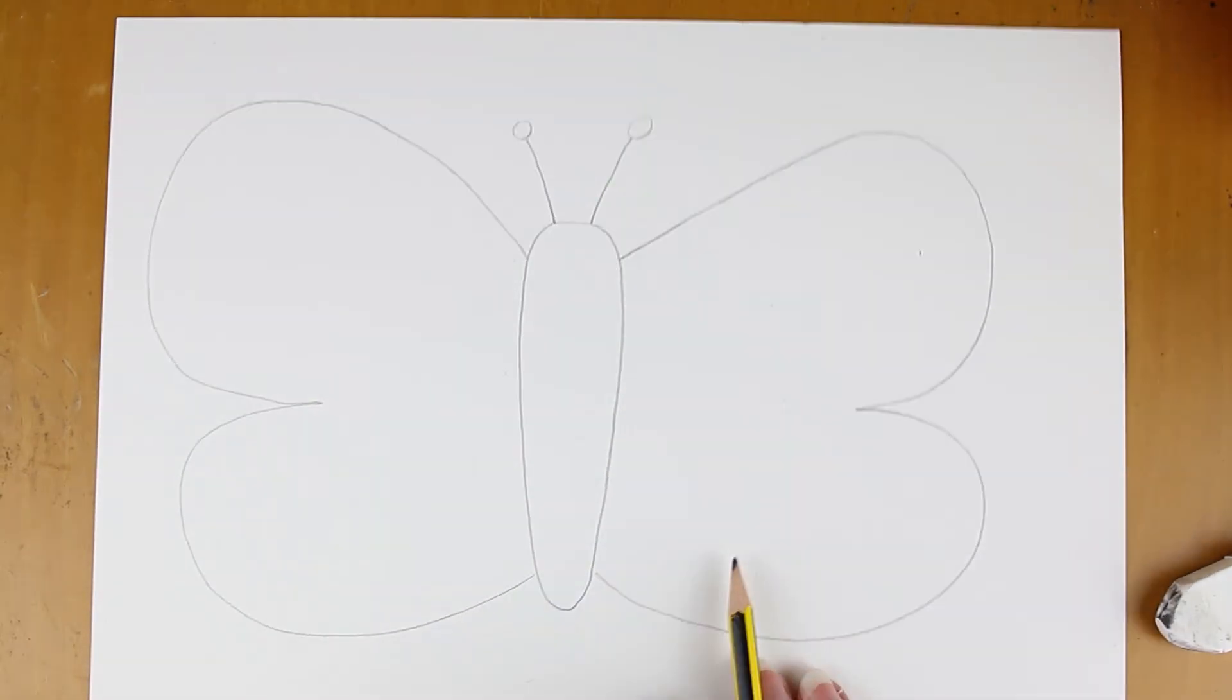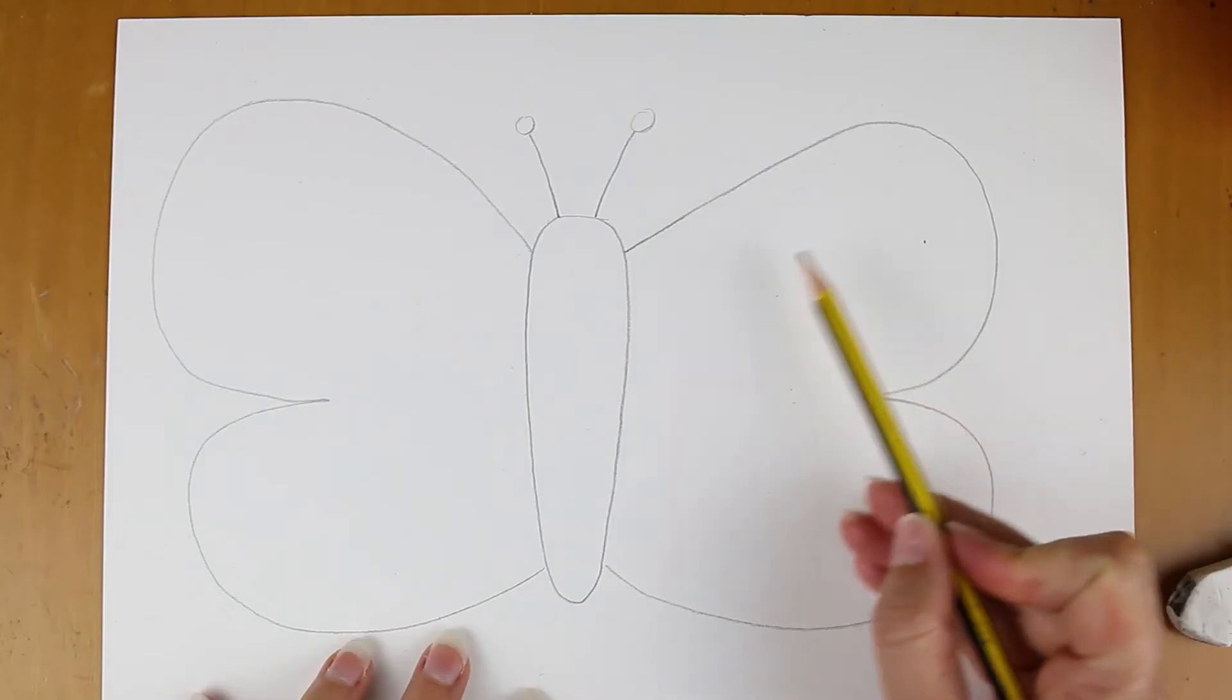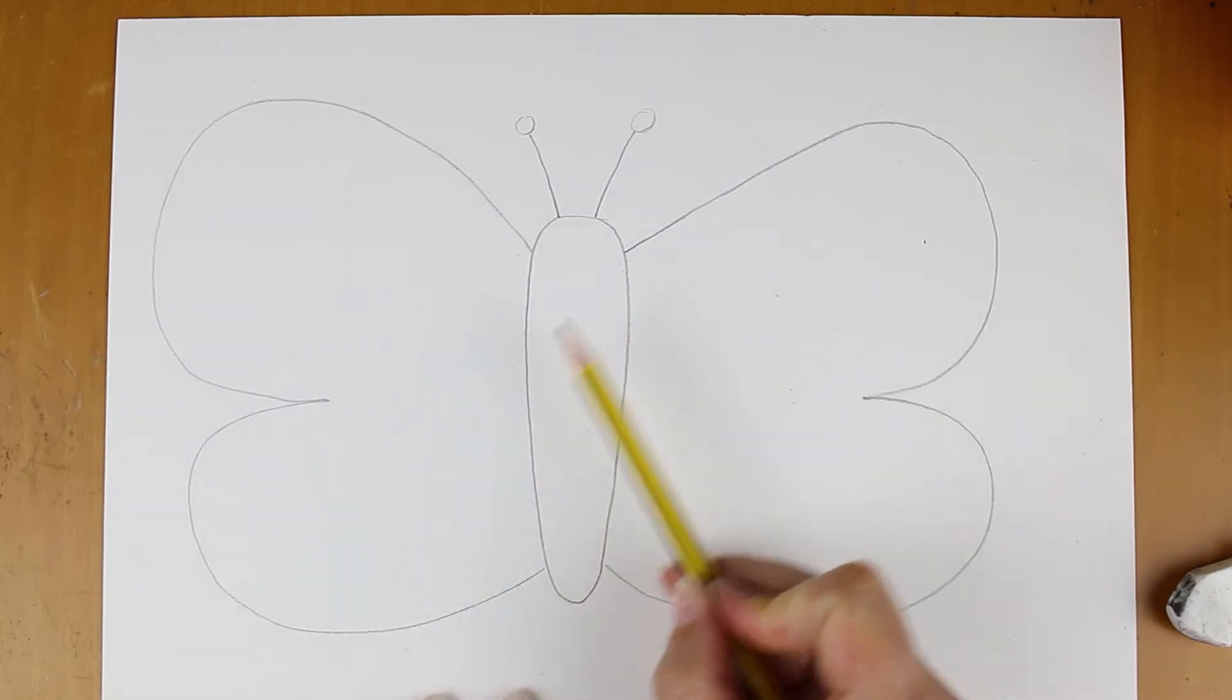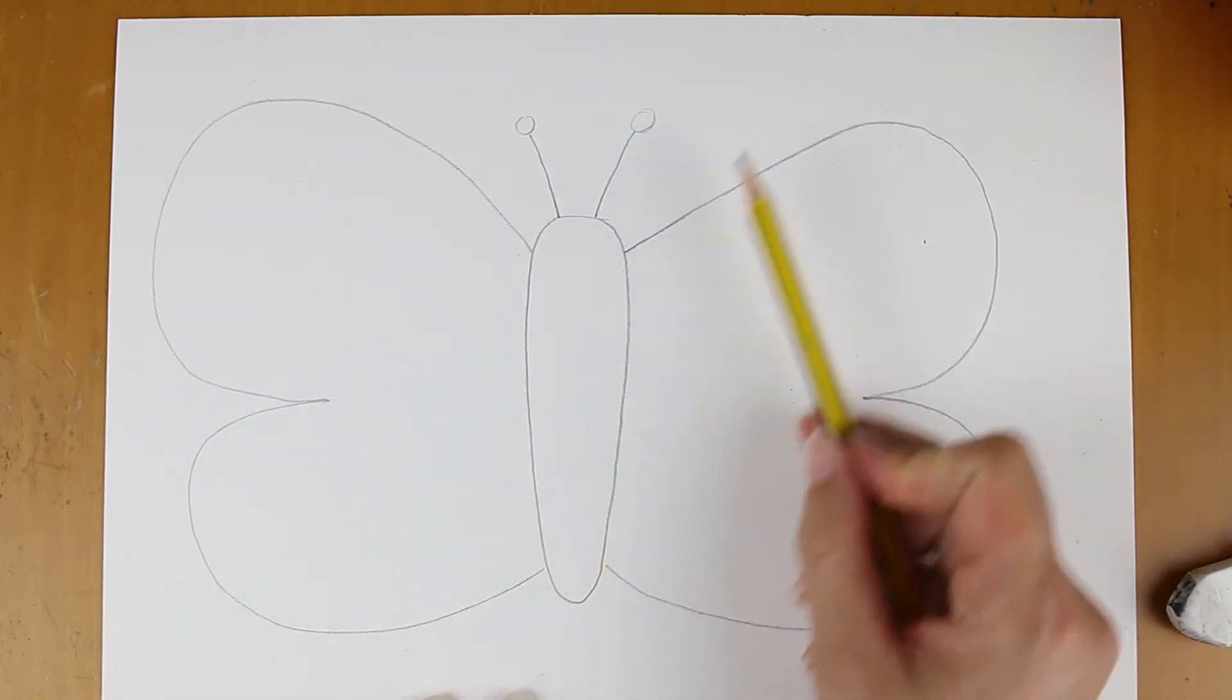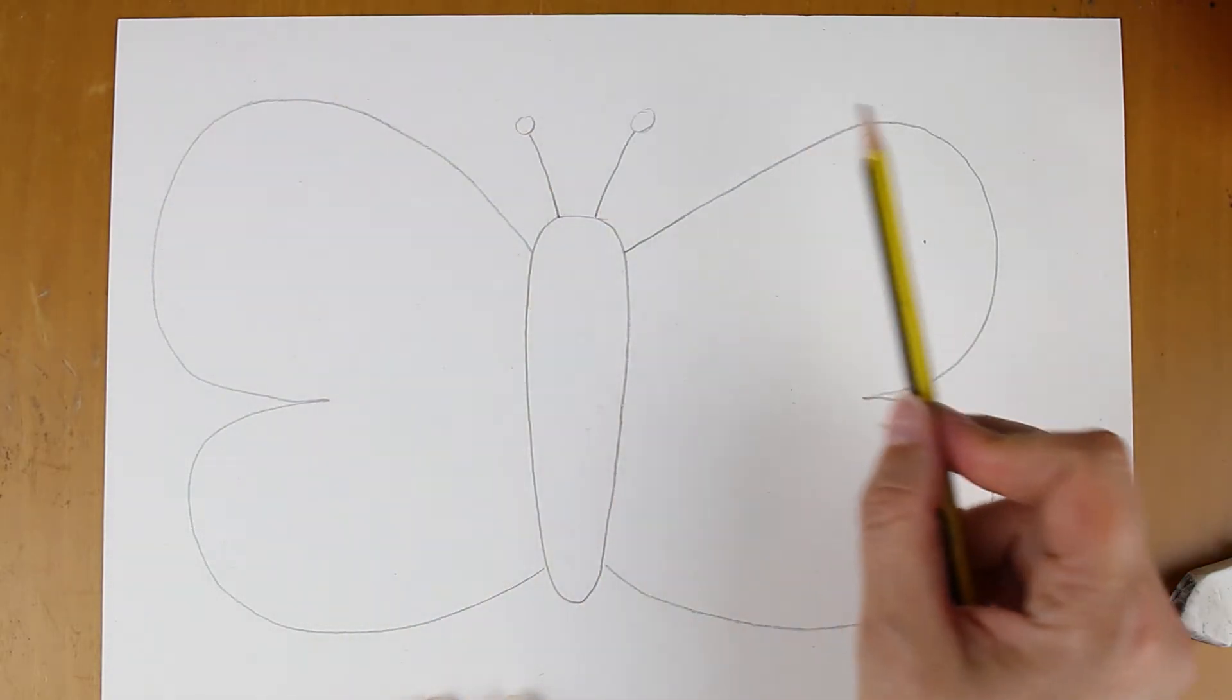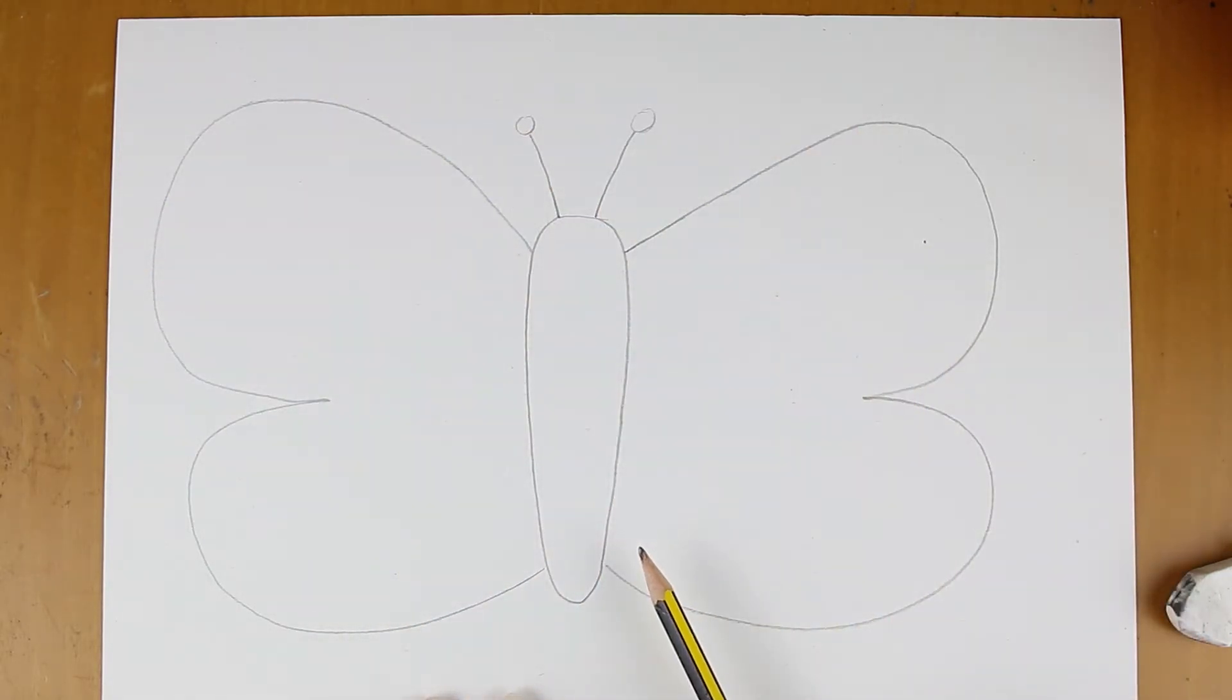Right, this is where we're going to stop drawing together and now it's your turn to decide how your butterfly will look. Will you fill the wings with patterns? For example, what colors might you want to use? Are you going to use paint or coloring pencils, or are you going to use collage, which is bits of paper or magazines cut up and stuck down?